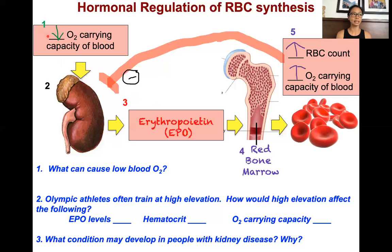In addition, pregnancy — because there's a demand by the baby to have more oxygen — will also cause the body to sense that more oxygen capacity is needed. This also includes diseases like asthma, anemia, lung disease, heart disease, and all sorts of conditions that make the body feel that oxygenation is not adequate.